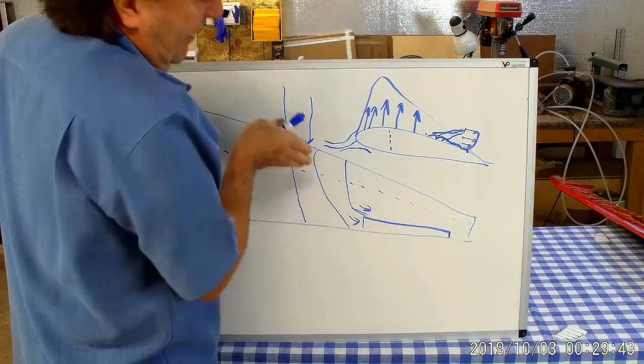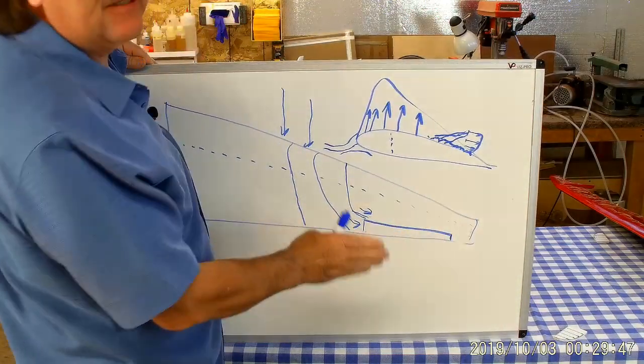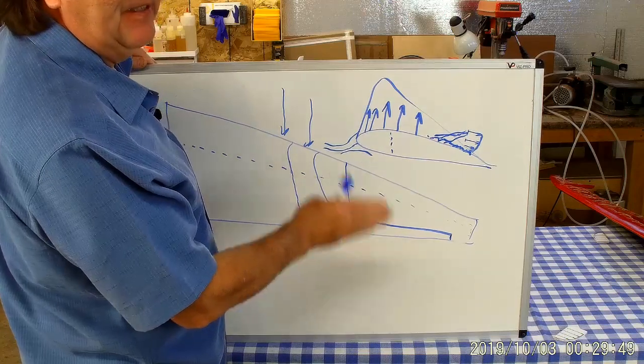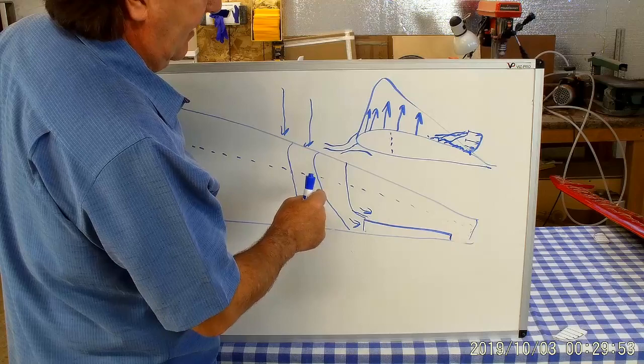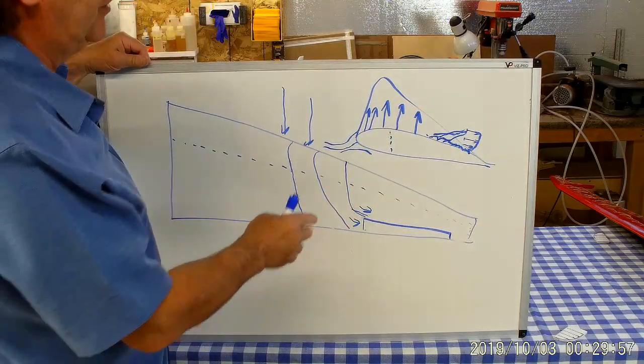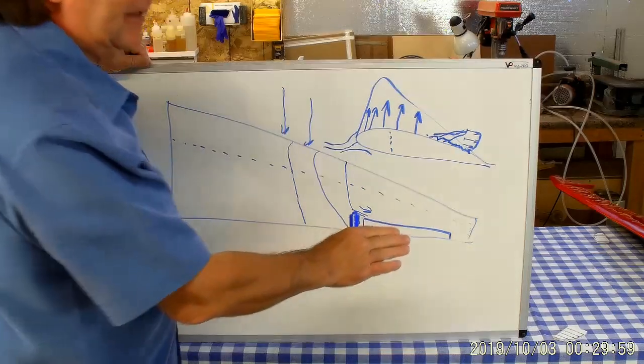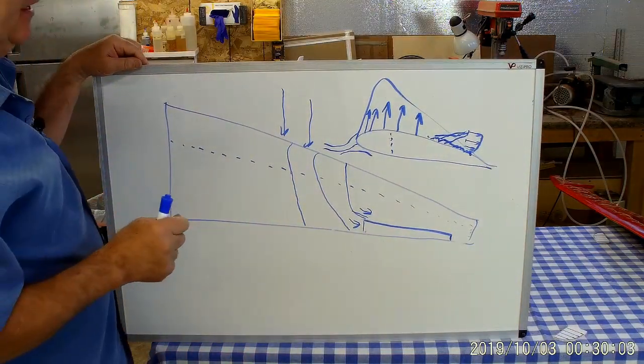And if you have an elevon or aileron out here and the flow starts going this way on that control surface, it's not very effective—in fact it can be not effective at all. And there's a variety of ways that designers work with swept wings to eliminate this spanwise flow.